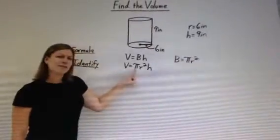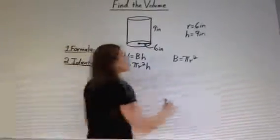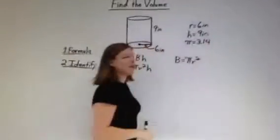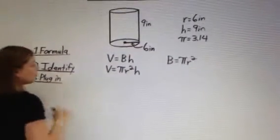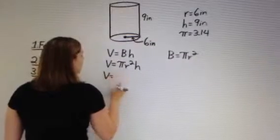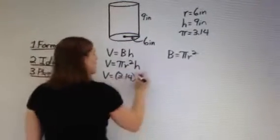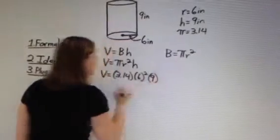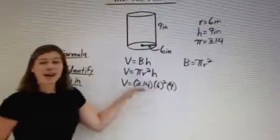Now let's plug these values into our formula. The volume of our cylinder equals π (3.14) times r squared (6 squared) times h (9). To find the volume, we solve this equation by simplifying the right-hand side using the order of operations.